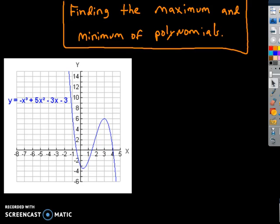This video is about finding the local max and local min of polynomials. Let's take this example we have here on the screen: negative x cubed plus 5x squared, subtract 3x, subtract 3. And this is the graph over here.